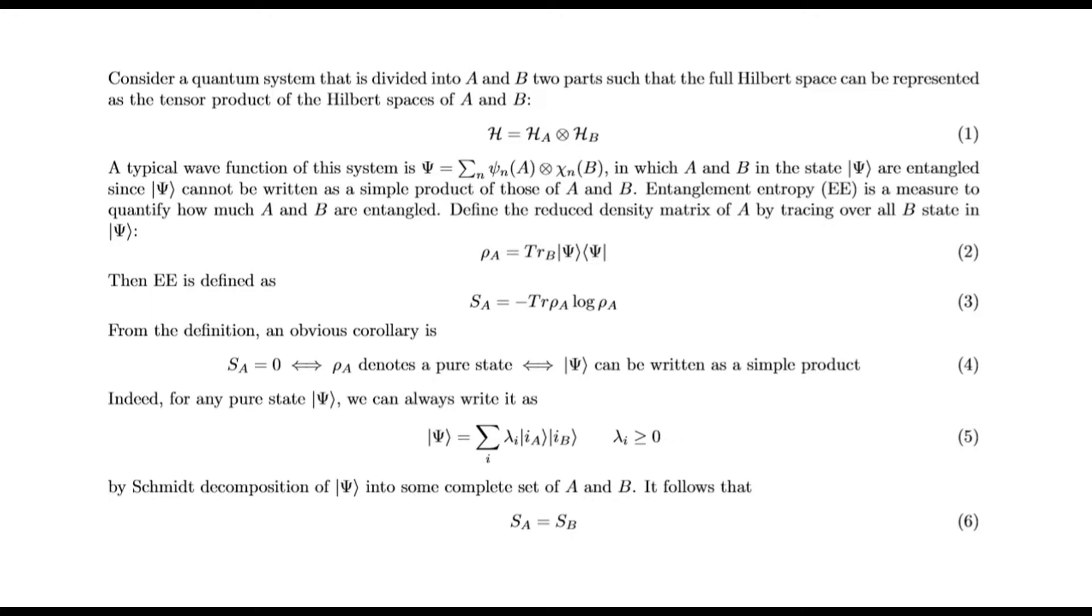From the definition, an obvious corollary is S_A = 0 ⟺ ρ_A denotes a pure state ⟺ |ψ⟩ can be written as a simple product. Indeed, for any pure state |ψ⟩, we can always write it as |ψ⟩ = Σ λᵢ|a(i)⟩|b(i)⟩, λᵢ ≥ 0. By Schmidt decomposition of |ψ⟩ into some complete set of A and B, it follows that S_A = S_B.